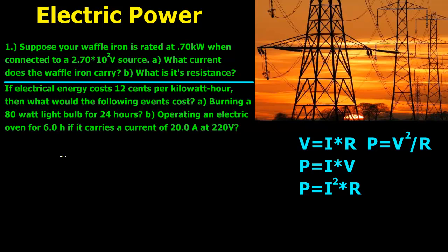Hi guys. Today we're just talking about electric power. For the first problem, it says: suppose your waffle iron is rated at 0.70 kilowatts when connected to a 270 volt source. What current does the waffle iron carry, and what is its resistance?